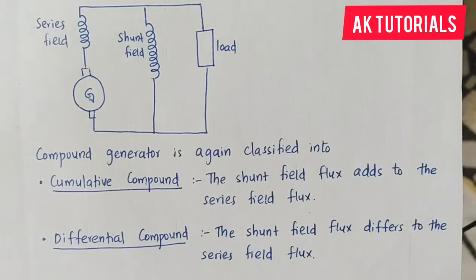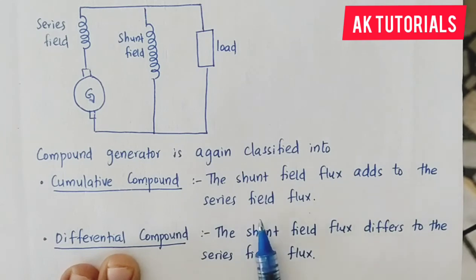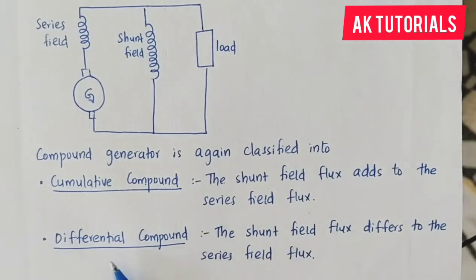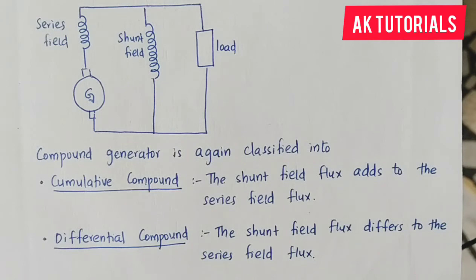In cumulative compound, the shunt field flux adds to the series field flux. The differential compound is the opposite: the shunt field flux is subtracted from the series field flux — that is, shunt field flux minus series field flux. That type of generator is called differential compound generator.